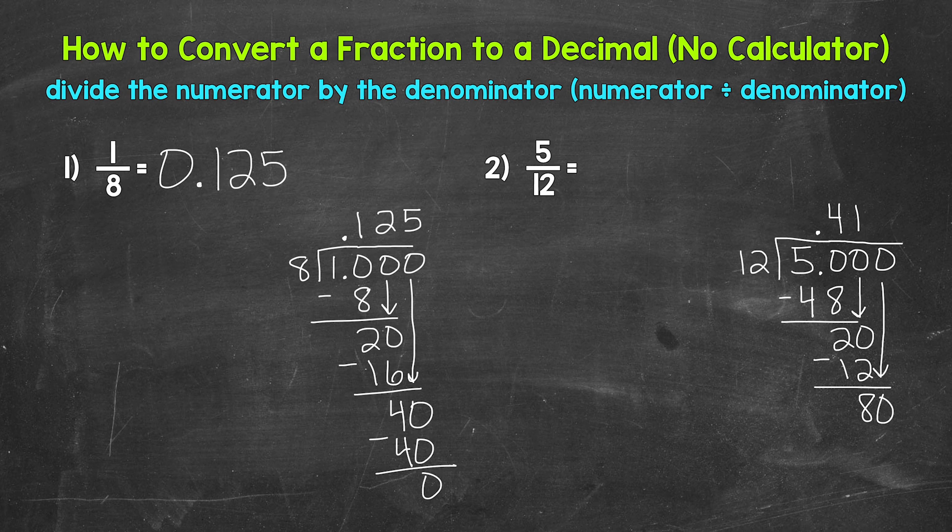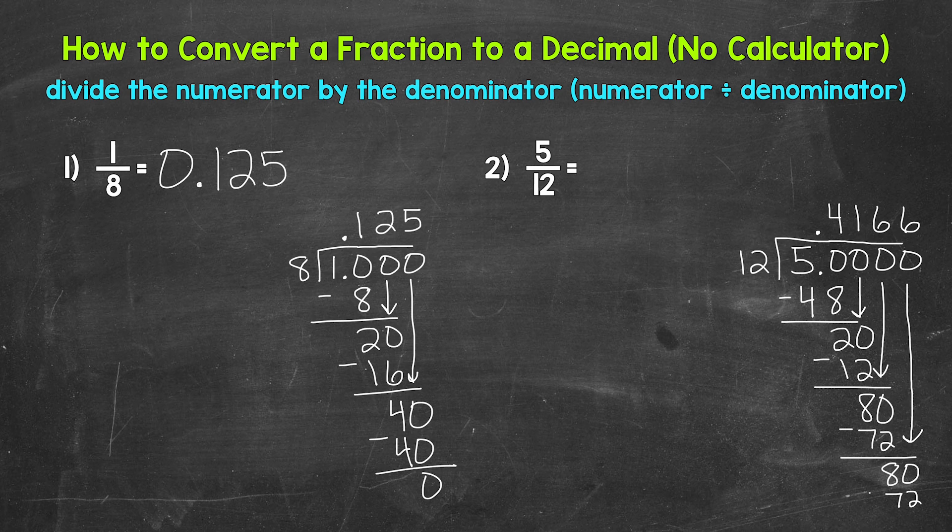And now we have 80. So 80 divided by 12. How many whole groups of 12 in 80? Well, 6. That gets us to 72. So 6 here. 6 times 12, 72. Subtract. 80 minus 72 is 8. Let's use another 0 and keep going here. So we have 80 again. How many whole groups of 12 in 80? Well, 6. 6 times 12, 72. Subtract.